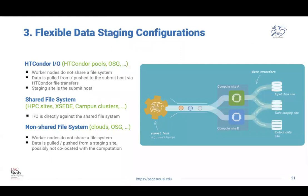Our third principle is flexible data staging configuration. Now that you have separation of data and compute, you need different ways of accessing the data. If running on an HTCondor pool, we use HTCondor I/O. We can also have a shared file system where storage is co-located with a compute resource for direct I/O against the shared file system. With separation, you can also do pools of data — once you land on a resource, data can be pulled from staging sites and pushed back to staging sites for execution.